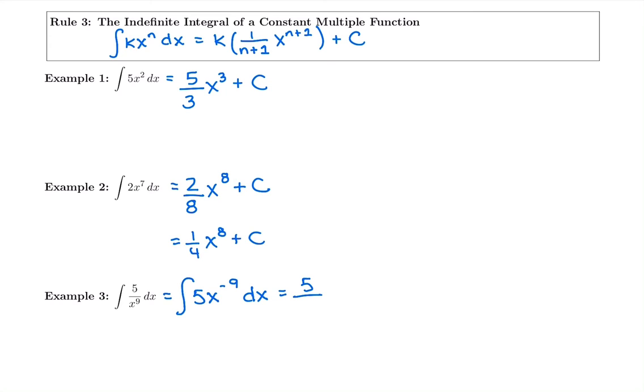We're going to keep the 5. Negative 9 plus 1 is going to be negative 8. Put that in the denominator. Put it up as your new power. Plus C.